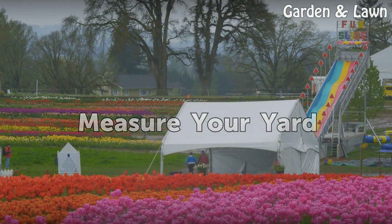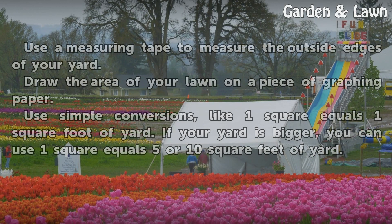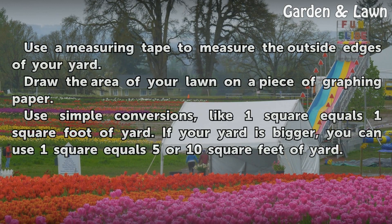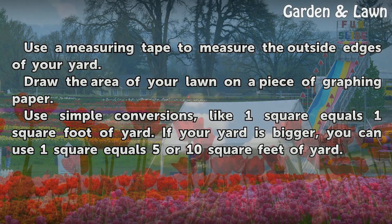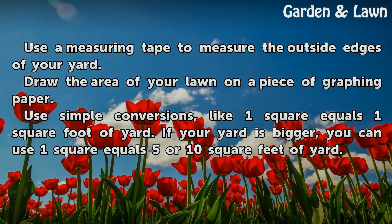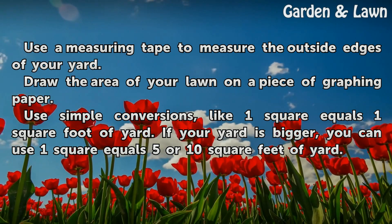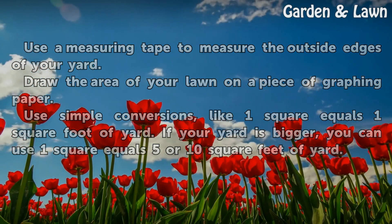Measure your yard. Use a measuring tape to measure the outside edges of your yard. Draw the area of your lawn on a piece of graphing paper. Use simple conversions, like 1 square equals 1 square foot of yard. If your yard is bigger, you can use 1 square equals 5 or 10 square feet of yard.